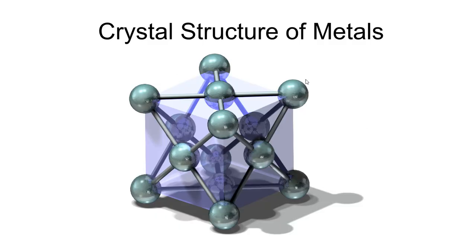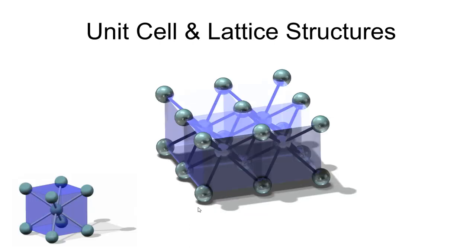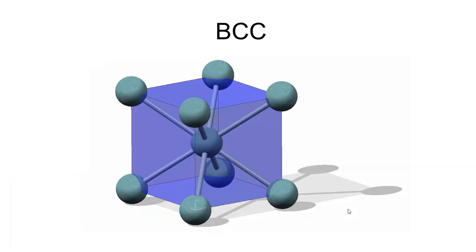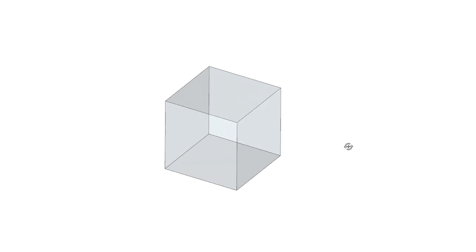Now let's talk about the crystal structure of metals — the arrangement that metals make. You don't normally think of metals as crystals; you think of quartz or diamond. But metals actually have a crystalline structure. At the atomic level, these atoms arrange themselves in a very regular, repeating way, and the base repeating unit is called the unit cell. This unit cell repeats over and over to form a lattice structure.